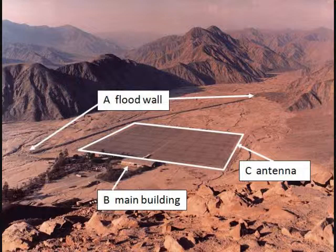A flood wall marked A in the photo has been built to protect the main buildings B and the 90,000 square meter antenna C.